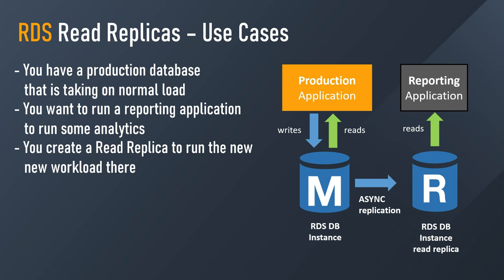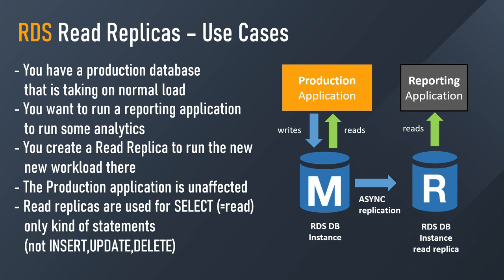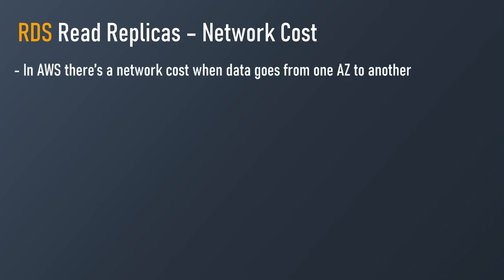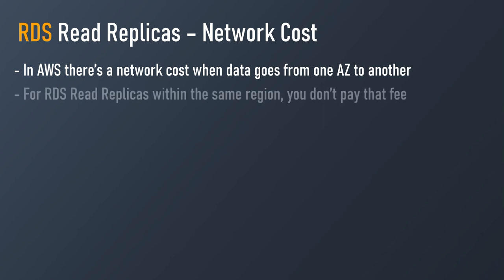The reporting application can do reads from the Read Replica and run analytics there, while the production application is completely unaffected. Remember, Read Replicas only support SELECT-type statements — SELECT means read. You cannot use keywords such as INSERT, UPDATE, or DELETE, which change the database itself. Read Replicas are only for reads. Now let's talk about the networking cost associated with RDS Read Replicas — in AWS there is normally a cost when data goes from one Availability Zone to another, but there are exceptions.